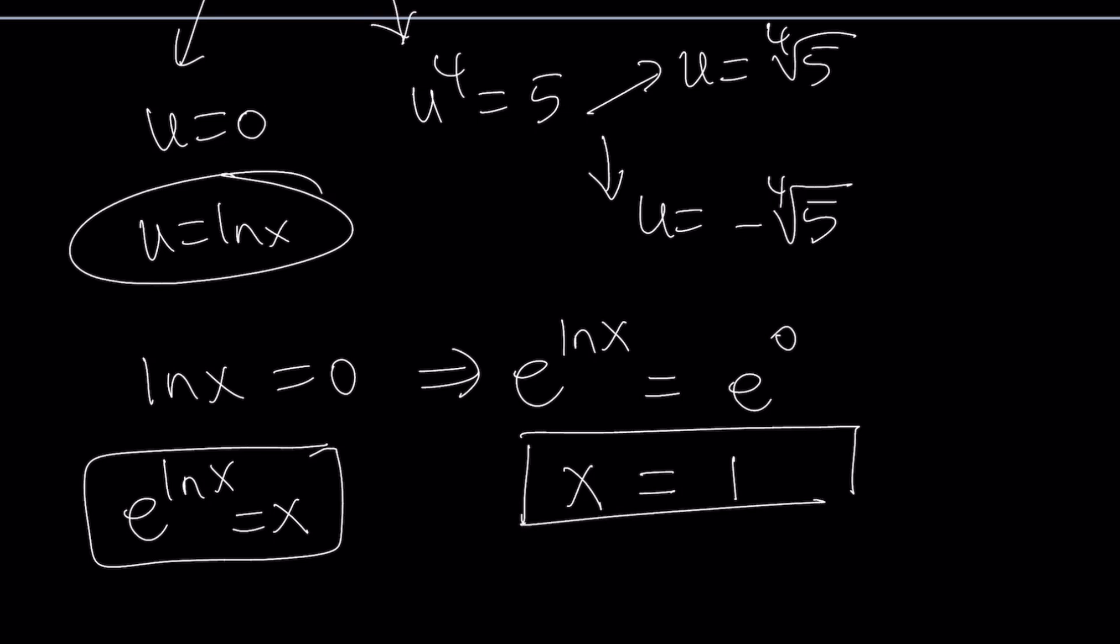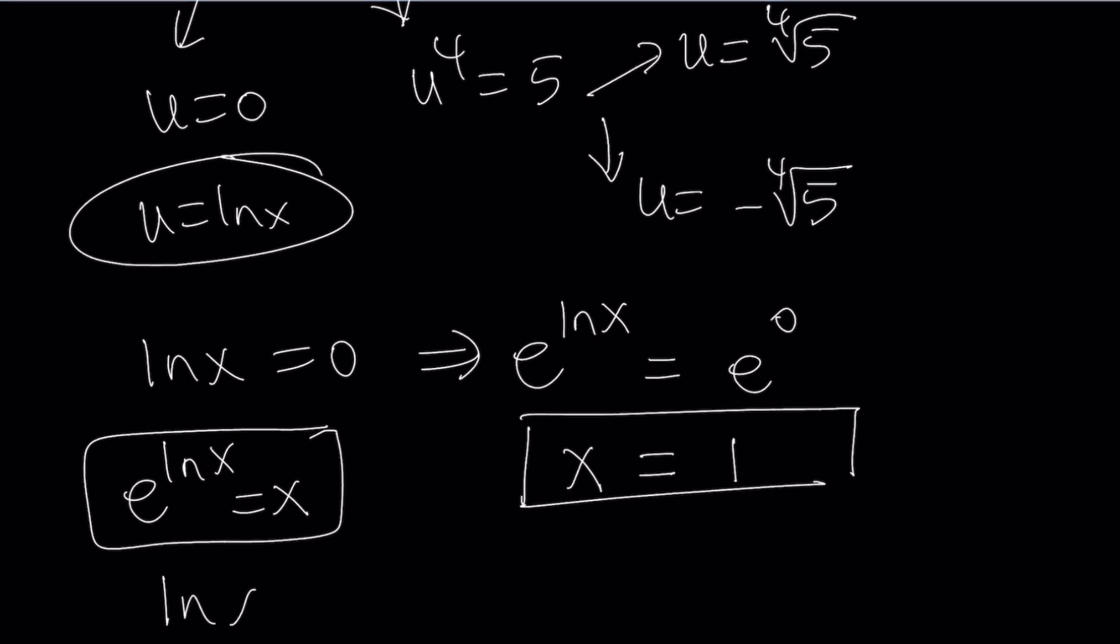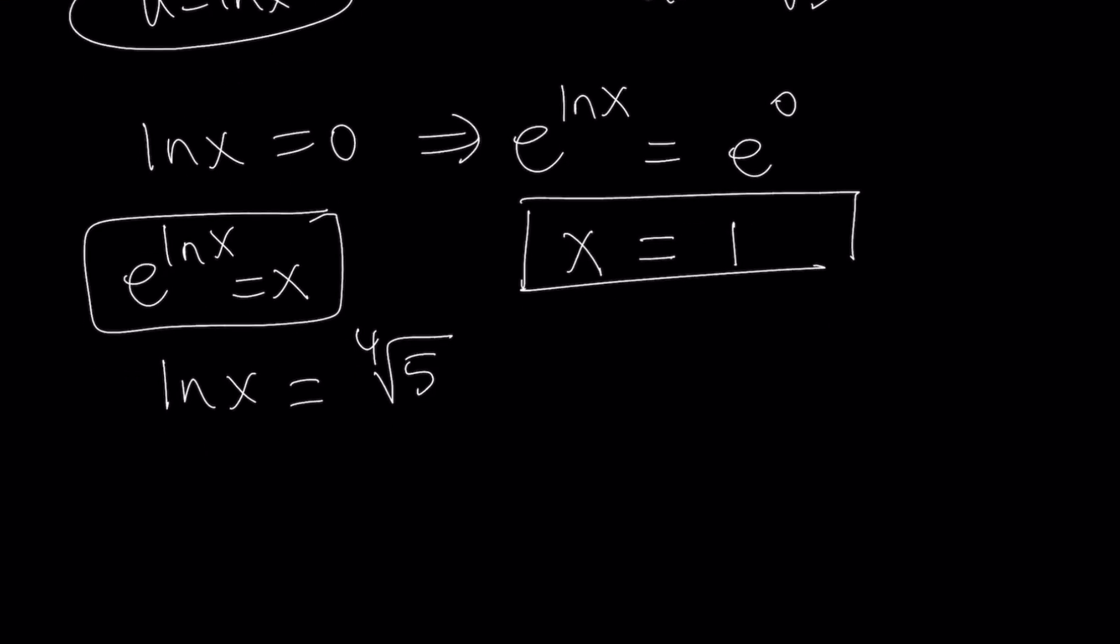Let's go ahead and set the other ones equal to ln x. ln x equals the fourth root of 5. Now again, you can do e to the power both sides. And you'll get the answer that way. So this means x equals e to the power 4th root of 5.